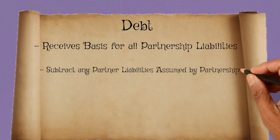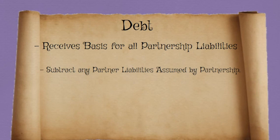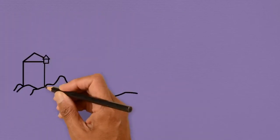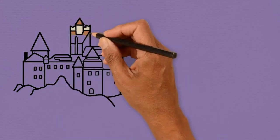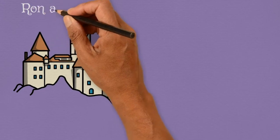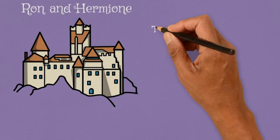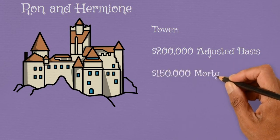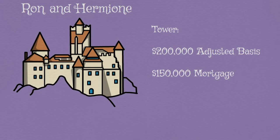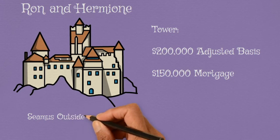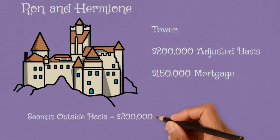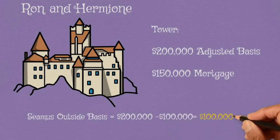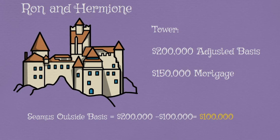There's more here, though. We subtract from basis any partner liabilities assumed by the partnership. Ron and Hermione are the partners making up their castle. They want to admit a third partner — let's call him Seamus. All three will have one-third ownership. Seamus contributes a whole tower with an adjusted tax basis of $200,000 and a mortgage of $150,000 assumed by the partnership. So Seamus contributed property with basis $200,000, but the associated $150,000 mortgage — two-thirds of this — is assumed by Ron and Hermione, the other two partners. Thus, Seamus' basis in the property, $200,000, is reduced by the $100,000 of the mortgage that is assumed. So Seamus' basis in the partnership is now $100,000. Seamus has his basis, and hopefully now you have yours.